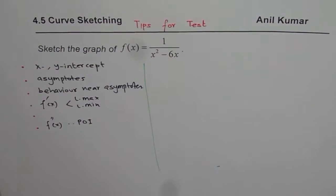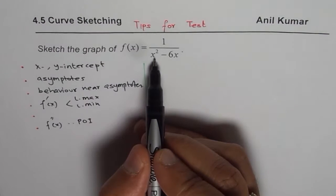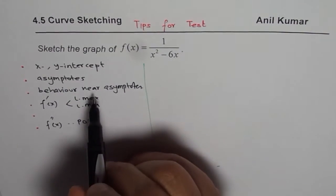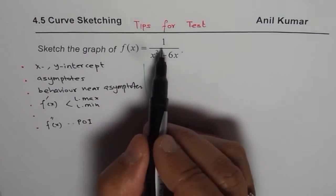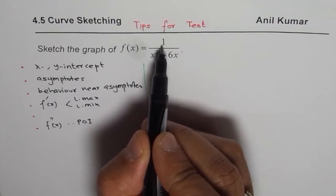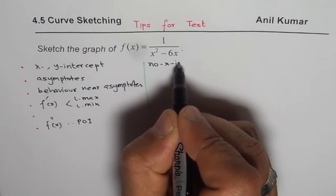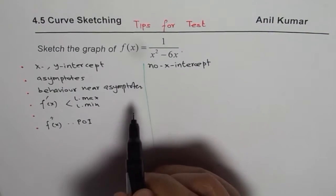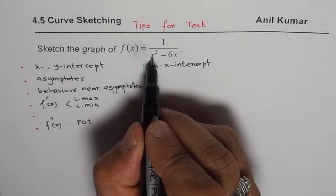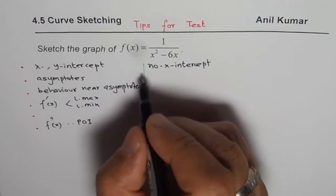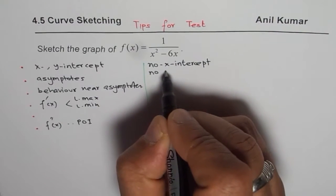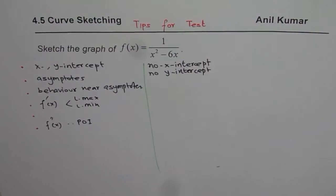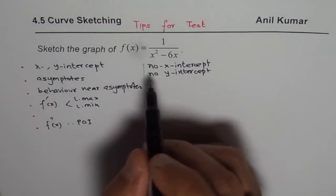Let's begin from the very beginning and find the x and y intercepts. Since the denominator is of higher degree, we know the horizontal asymptote is y = 0. As for intercepts: the numerator is 1, which can never be 0, so we have no x-intercept. If we write 0 for x, the function is undefined, so we also have no y-intercept. Both x and y intercepts do not exist in this case.